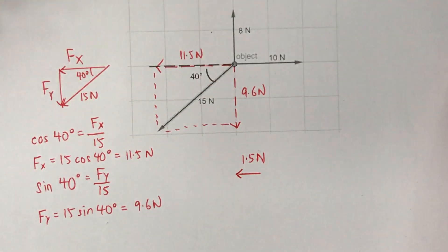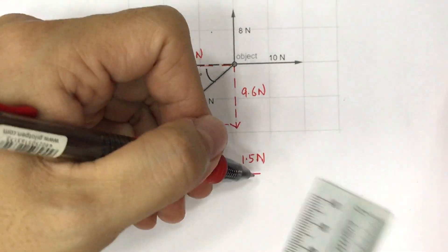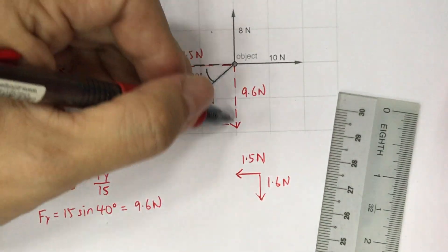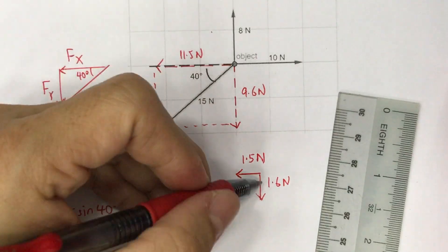And if you compare the vertical forces, 9.6N downwards and 8N upwards, it will give us a net downward force of 1.6N.